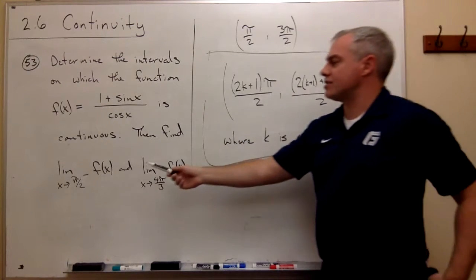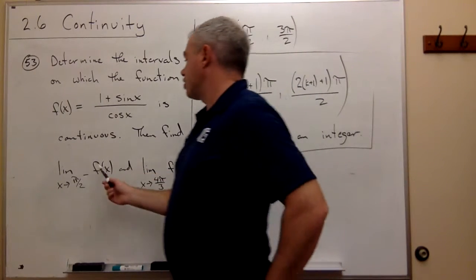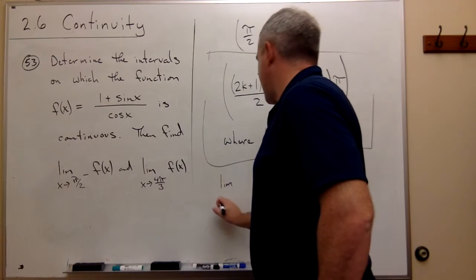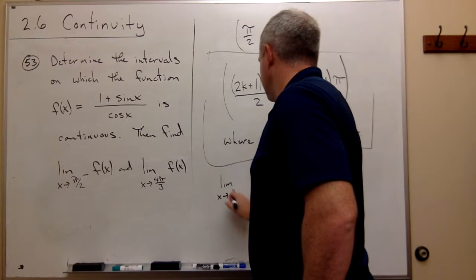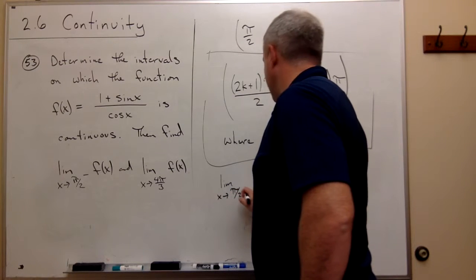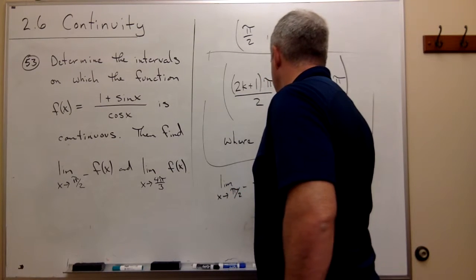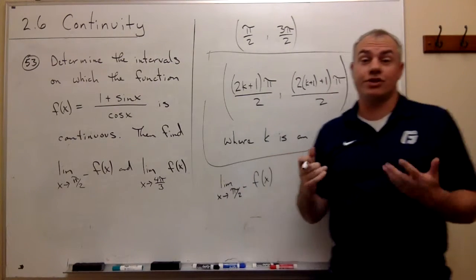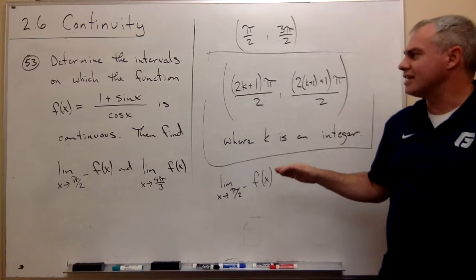Now we want to find these two limits. And so the first limit we want to look at is what's the limit as x goes to pi over 2 from the left of this function f(x). So I guess the first question we should answer before we even look at this question is: